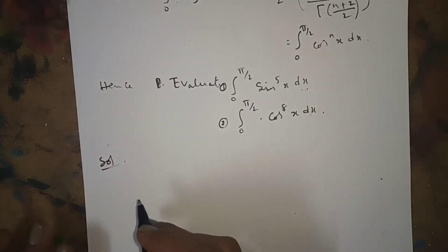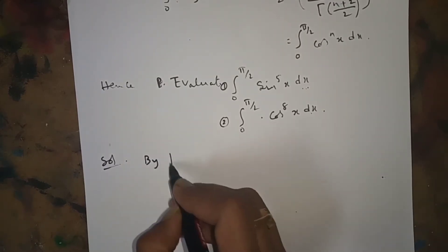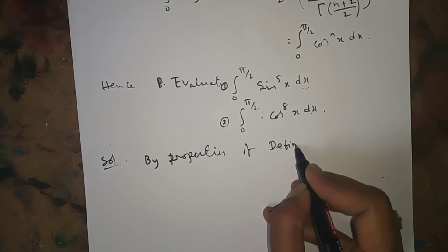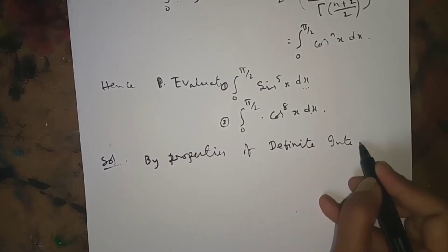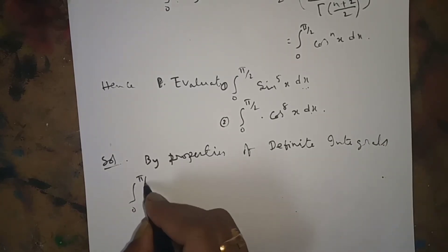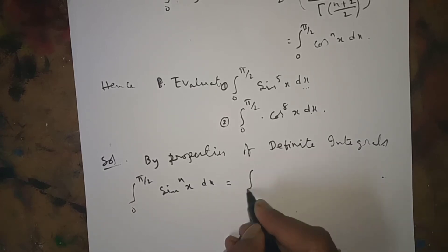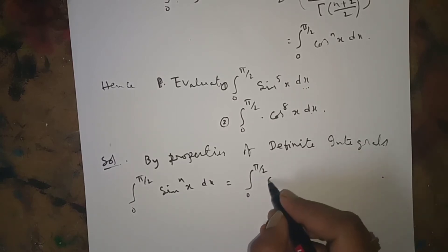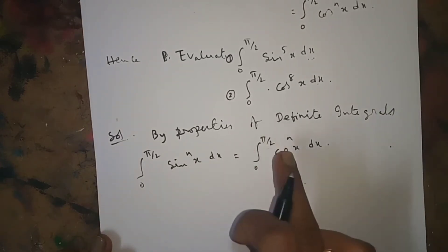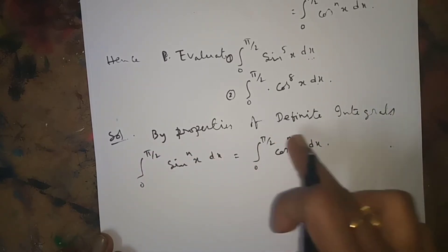To prove this, by properties of definite integrals we know the intermediate formula: integral from 0 to π/2 of sin^n(x) dx is equal to integral from 0 to π/2 of cos^n(x) dx. So we can write the LHS using this formula.